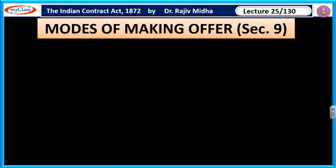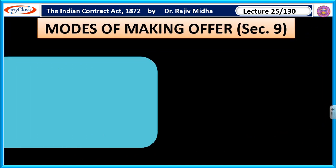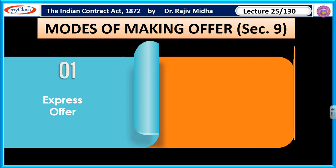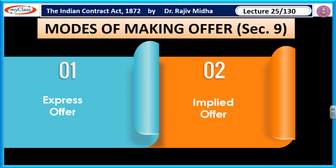Modes of making offer. Section 9. There are two ways of making offer. The first one is express offer and the second one is implied offer.